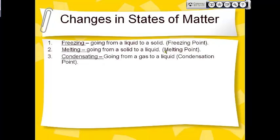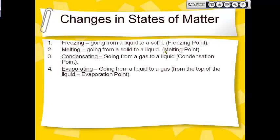Condensation is when you go from a gas to a liquid. The temperature at which that happens is called the condensation point. The best example is when you take a hot shower and the steam touches your mirror, turning back into liquid. Then there's evaporating — when something goes from a liquid to a gas from the top of the liquid. For example, water left outside in the sun will evaporate and turn into vapor in the atmosphere.